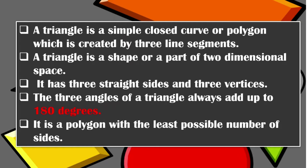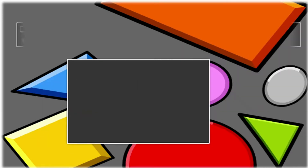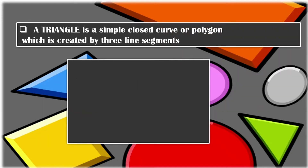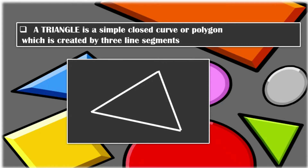So, a triangle is a kind of polygon with the least number of sides. A triangle is a simple closed curve or a polygon, which is created by three line segments — one, two, three. That is a triangle composed of three line segments.